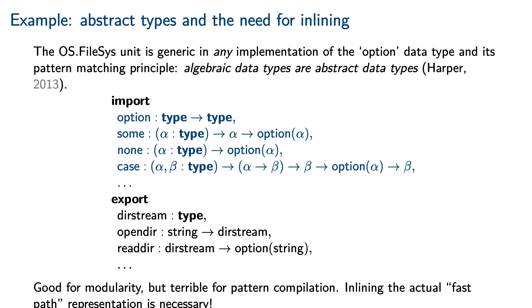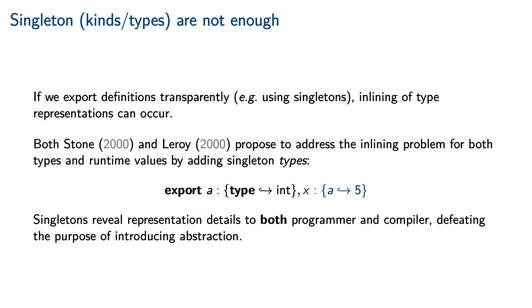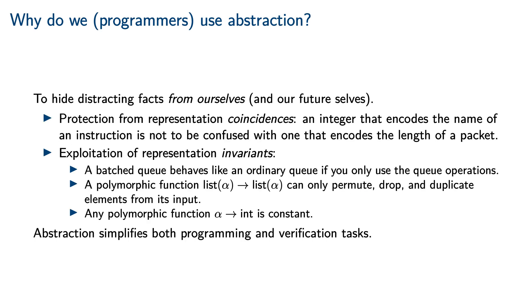This is good for modularity, but it's actually terrible for pattern compilation. If we had a lot of nested pattern matches, we would certainly want these to not be implemented by calls to various functions, but instead implemented by a real pattern compiler. Therefore, inlining the fast path representation is not optional. We saw earlier that singleton kinds can be used to expose the representation of a type. Both Stone and Leroy proposed to address the inlining problem for both types and runtime values by adding an analogous singleton type connective — in an interface, we could expose not only the definition of a given type, but also the definition of an element of that type. Unfortunately, this solution is too naive: singletons reveal representation details to both the programmer and the compiler, which defeats the purpose of introducing abstractions in the first place. The reason we even bother with abstractions is to hide distracting facts from ourselves and from our future selves, who tend to be more ignorant than our present selves.